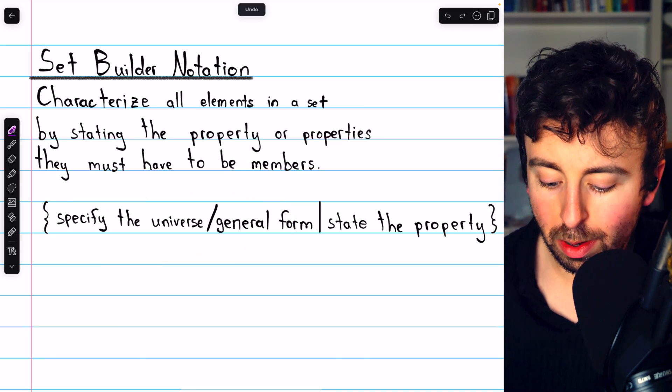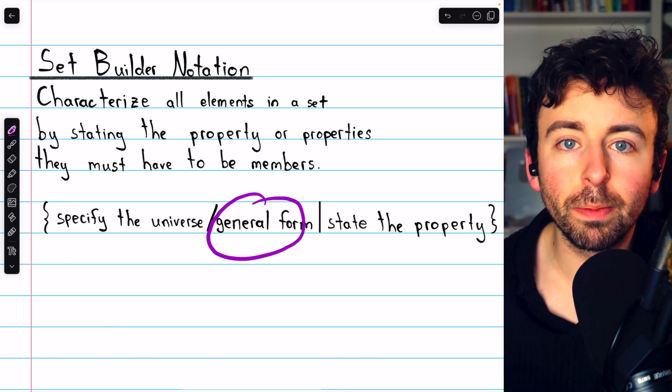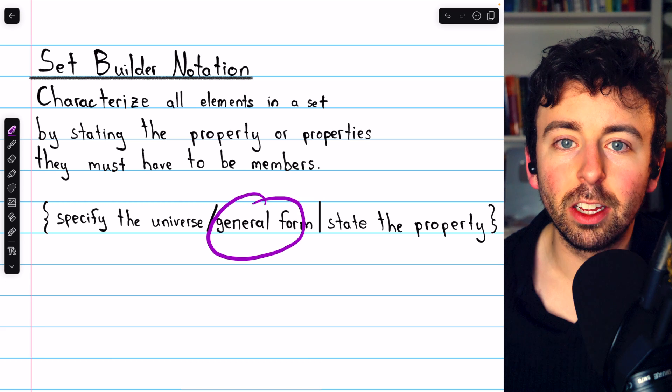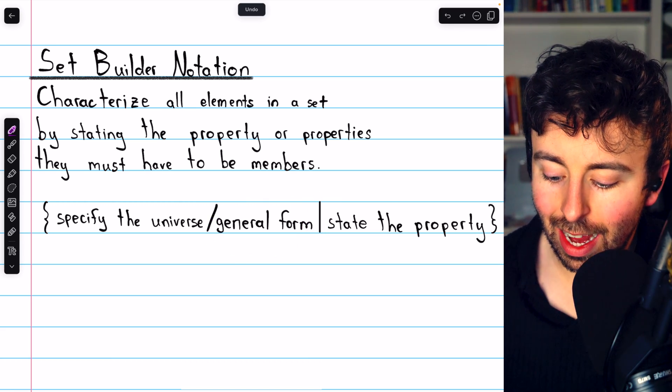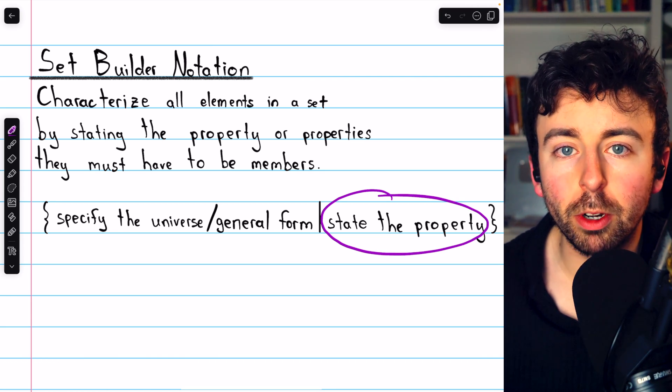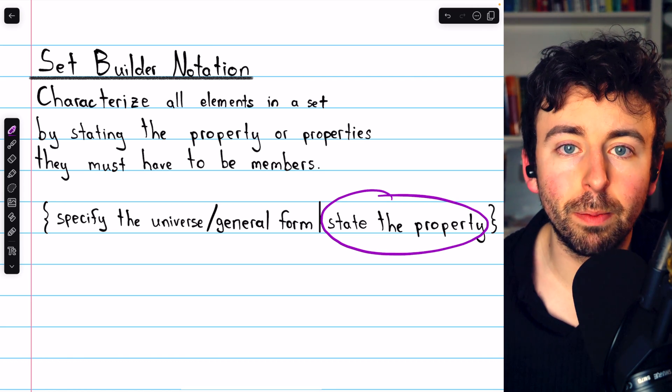Or we might just give the general form of an element of the set, like 2k or n squared. And then to the right of the line, we state any additional property or properties these elements must have to be in the set.